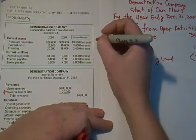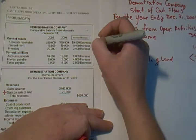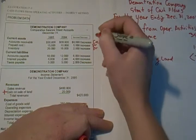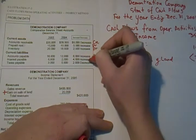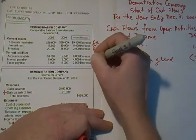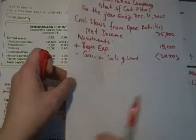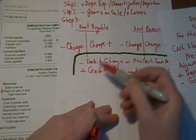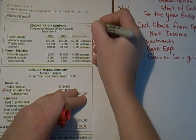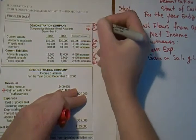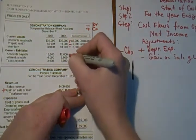Think of it in terms of debits and credits. To decrease accounts receivable, which is an asset, we need to credit it. To increase prepaid or inventory — both assets — we need to debit the accounts. To increase accounts payable, which is a liability, we need to be on the credit side. Increasing interest payable is also a credit, and a decrease in a payable is a debit. The generic rule is: subtract debit changes and add credit changes.